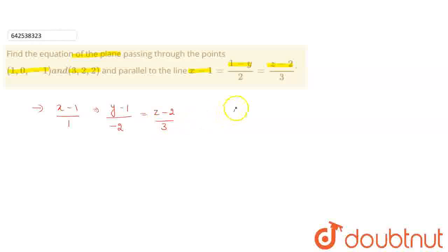So the plane is passing through the point (1, 0, -1). So we can write it as a(x-1) plus b(y-0) plus c(z+1).